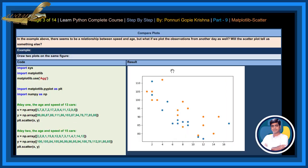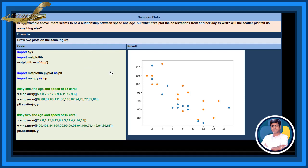Compare plots. In the examples above, there seems to be a relationship between speed and age. But what if we plot the observations from another day as well? Will the scatter plot tell us something else? See, draw two plots on the same figure. See two color plots.